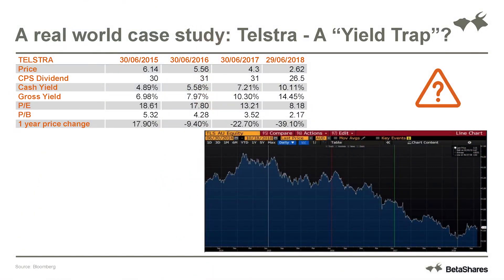The dividend actually jumped from 30 cents per share to 31 cents per share. Moving 12 months later again to 30 June 2017, Telstra's share price has fallen to $4.30, off another 22.7%. Its P/E has fallen over the last two years from 18.5 times down to 13.2 times. The dividend has been maintained, but its yield has gone from a 4.9% cash yield to 7.21%, and its gross yield has gone from about 7% to 10.3%. When a share has fallen substantially like that and its yield looks high, an investor may be sucked in to thinking the prospects for that business are strong, or that the yield is likely to sustain the share price.